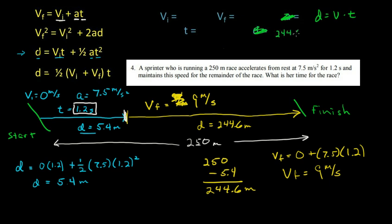So distance is going to be 244.6 meters equals the velocity, which is 9 meters per second, times the time, which is the unknown. So we're going to divide both sides by 9, and so we get time is going to equal 27.2 seconds. So I'm going to round that. So that's the time it took for this yellow section.